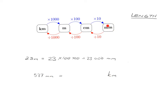What about going from millimeters to kilometers? The diagram says divide by ten, then divide by a hundred, then divide by a thousand. From our decimals work, we move the decimal point — divide by ten moves it one place, divide by a hundred moves it two more, and divide by a thousand moves it three more. So the answer is 0.00000537 kilometers — that's zero point five three seven with the appropriate leading zeros.